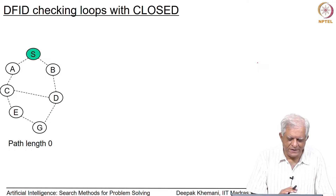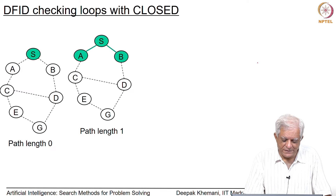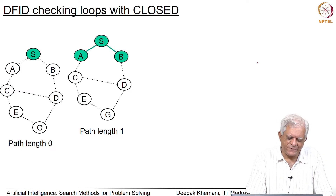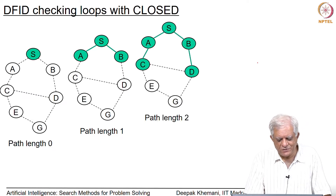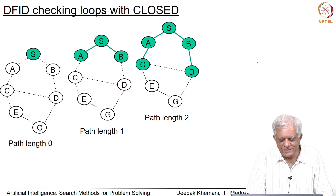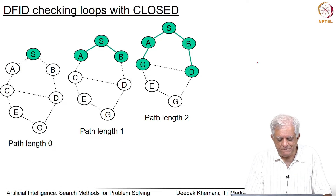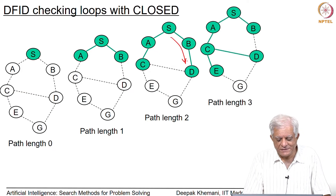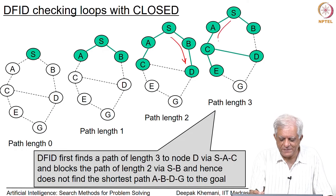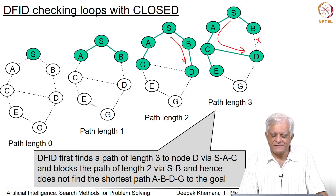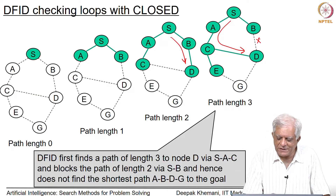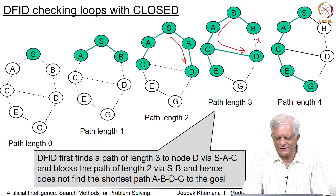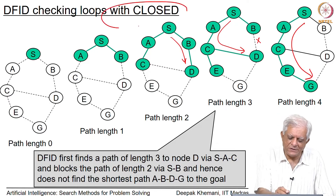Looking at the same problem again: when it explores paths of length 0, it has seen only the start node. When it explores paths of length 1, it has generated A and B. When it looks at paths of length 2, it has looked at paths S-A-C and S-B-D. At this point it has found the shortest path to D. But when it looks at paths of length 3, it finds a longer path to D, and more importantly it does not allow D to be generated as a child of B because D has already been inspected. Consequently it does not find the shortest path, and eventually it finds the longer paths to the goal node. Therefore, maintaining a closed list is a no-no if you are doing DFID.